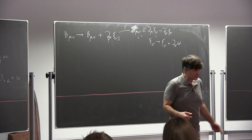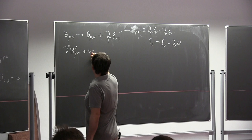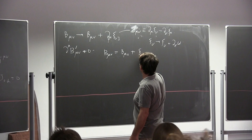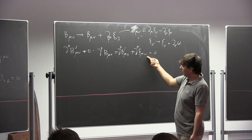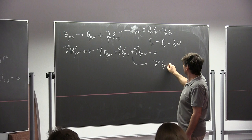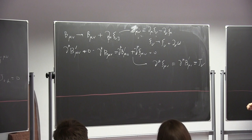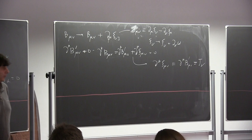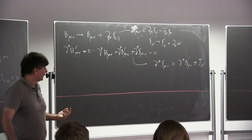It's useful to go into the gauge in which B_μν is divergence-free. We can do this because if I start with B_μν which has non-zero divergence, I can perform a gauge shift. The condition that B_μν is divergence-free can always be satisfied — this is simply a Maxwell equation for the transformation parameter. Think of it as a source of the Maxwell equation.